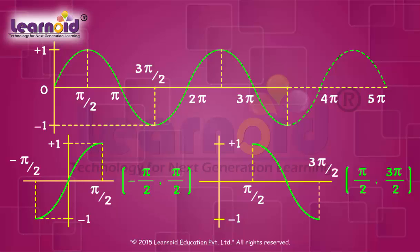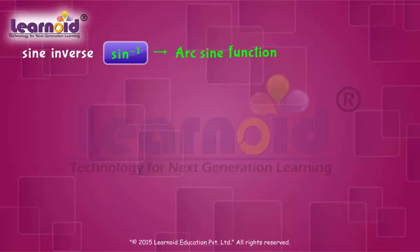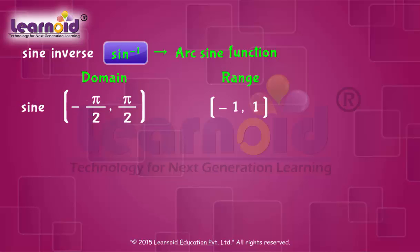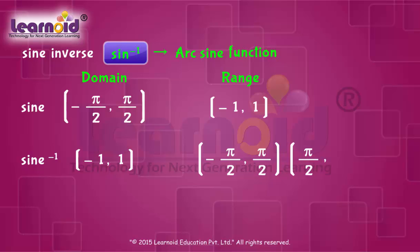We can define the inverse of the sine function in each of these intervals. Inverse of sine function is denoted by sine to the power minus 1. We can also call it the arc sine function. Thus, sine inverse is a function whose domain is minus 1 to 1, and range is any interval such as minus pi by 2 to pi by 2, or pi by 2 to 3 pi by 2, etc. Minus pi by 2 to pi by 2 is called the principal value branch.